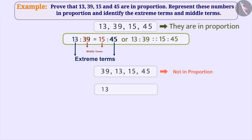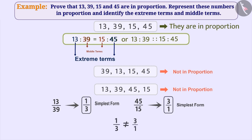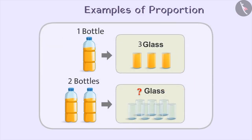If we change the order of the terms and write as 13, 39, 45 and 15, then also these numbers will not be in proportion, because the simplest form of 13 by 39 is 1 by 3, and the simplest form of 45 by 15 is 3 by 1, and 1 by 3 is not equal to 3 by 1. Therefore, we can say that if the order of the terms is changed, it is not necessary that they are in proportion. In the same way, find some examples in your surrounding situations and check whether they are in proportion or not.